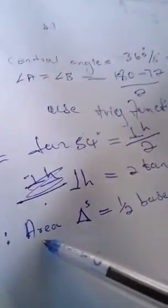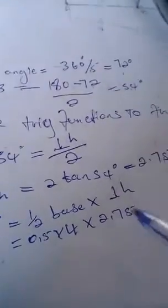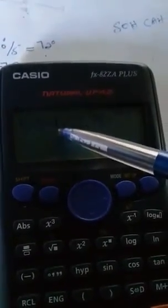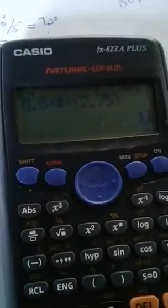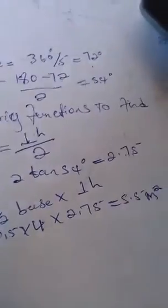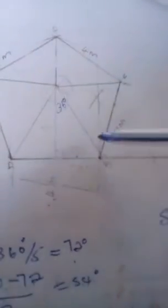Therefore, the area of the triangle equals half base times the perpendicular height. That is 0.5 times 4 (the base) times 2.75 (the perpendicular height). So 0.5 times 4 times 2.75 equals 5.5 square meters. That is the area for this one triangle.